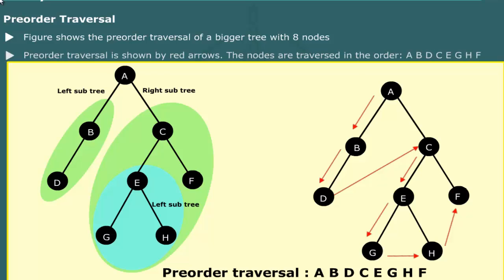Pre-order traversal of this tree is A, B, D, C, E, G, H, and F.